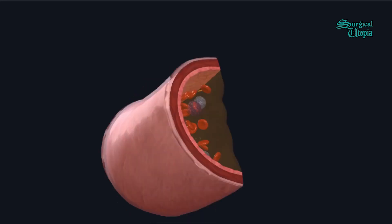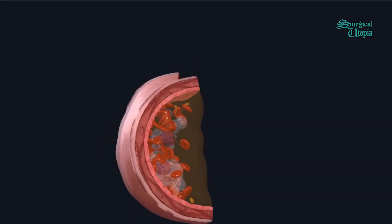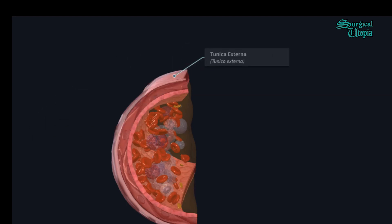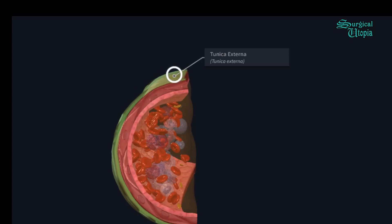We will see the layers of the artery from outside to inside. This outermost layer here is the tunica externa, and it forms the outermost layer of the artery wall. It possesses a network of small vessels called the vasa vasorum, which provides the blood vessel with molecules and nutrients for cellular activity.